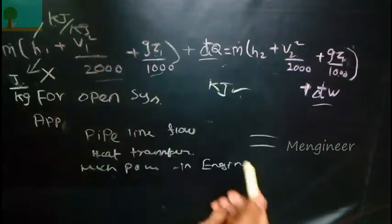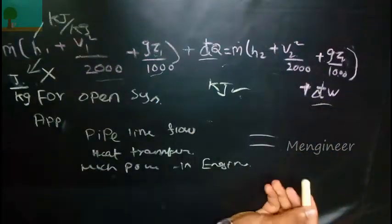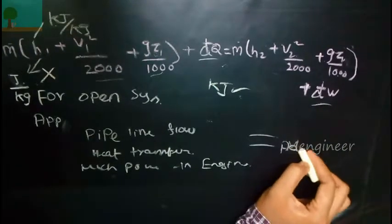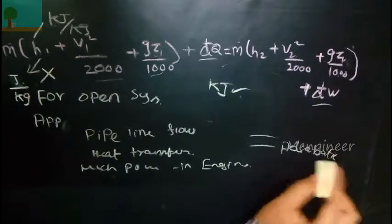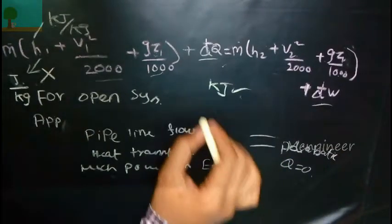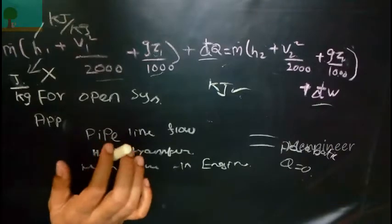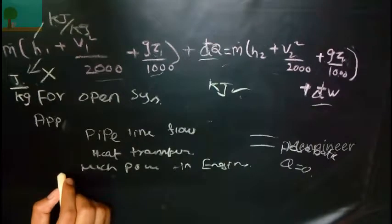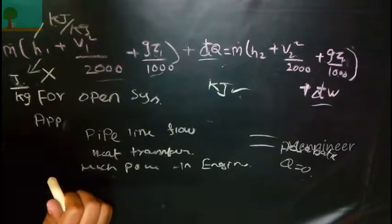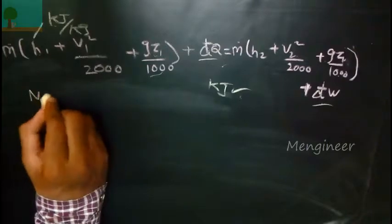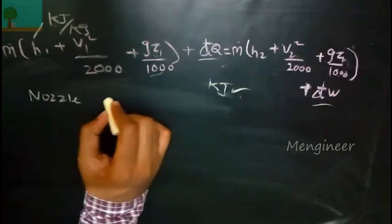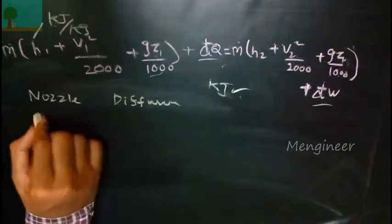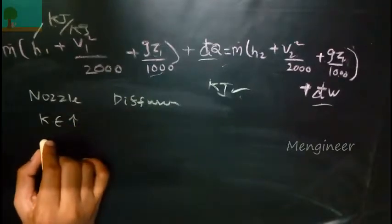If there is no elevation, we should not consider this term. Similarly, if there's no velocity, we have to consider accordingly. If it is given as adiabatic, then Q will be zero, so the value of dQ will become zero. Likewise, you have to change this equation according to the question. If they are not given the velocity value, then just skip it and assume it to be zero.